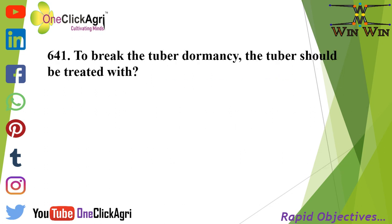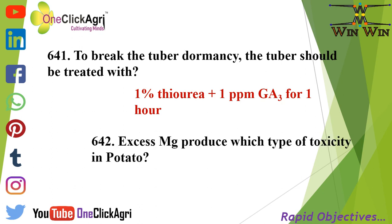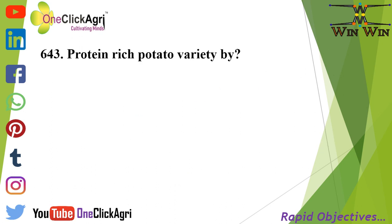To break tuber dormancy, the tuber should be treated with 1% thiourea plus 1 ppm GA3 for 1 hour. Excess magnesium produces stem streak necrosis toxicity in potato.